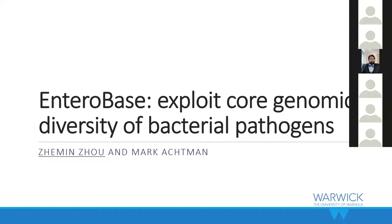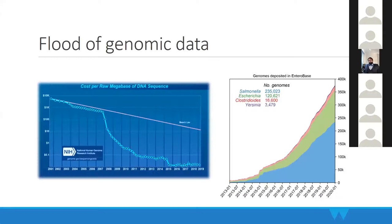Most of you have already seen the figure showing the decreasing sequencing cost, and in the meantime we see a lot of genomes being added to the public domain. Here I mention genomes in Enterobase, but we got most of our genomes from short-read archives in NCBI — that figure also shows the volume in NCBI.